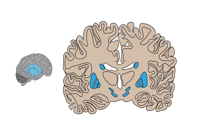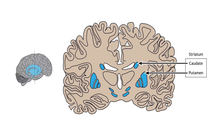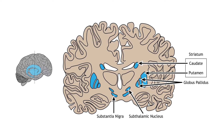The basal ganglia are a group of subcortical nuclei, meaning groups of neurons that lie below the cerebral cortex. The basal ganglia is comprised of the striatum, which consists of the caudate nucleus and the putamen, the globus pallidus, the subthalamic nucleus, and the substantia nigra.